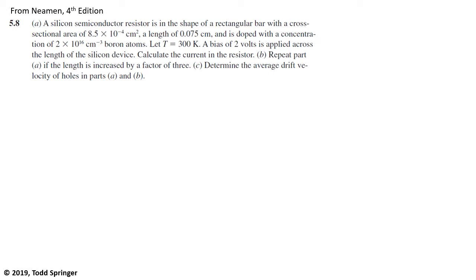So let's work out this problem from the book by Neiman, chapter 5.8. The silicon semiconductor resistor is in the shape of a rectangular bar with a cross-sectional area given and the length also given, and is doped with a concentration of 2 times 10 to the 16 boron atoms per cubic centimeter at 300 Kelvin. Two volts is applied across the length of the device. Calculate the current and the resistor. And then there's follow-up parts.